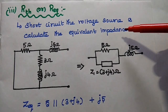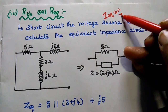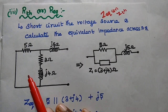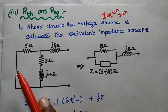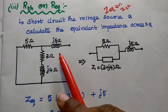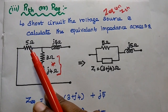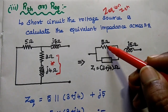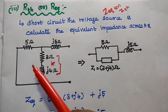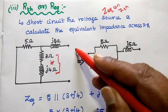In the next step we find the Thevenin resistance, or equivalent impedance — also called Thevenin impedance. We short circuit the voltage source, which is very important for finding the equivalent impedance. Then we calculate the overall equivalent impedance: the 3 Ohm and J4 Ohm are in series and can be added. The 5 Ohm is in parallel with this combination, and then this parallel combination is in series with J5 Ohm.